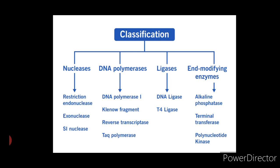Fourth, end-modifying enzymes. End-modifying enzymes are enzymes which make changes at the end of DNA molecules, adding an important dimension to the design of ligation experiments and providing one means of labeling DNA molecules with radioactive and other markers. For example, alkaline phosphatase, terminal transferase, and polynucleotide kinase.